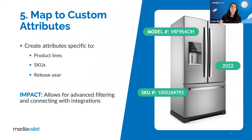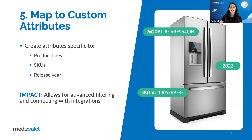Taking this approach can really help with metadata governance. Consider, for example, that you were tasked with keywording the country of manufacturing. Would you say 'United States'? Would you say 'USA'? Would you say 'the United States'? Custom attributes remove the decision-making from keywording with tools like drop-downs and multi-select lists.